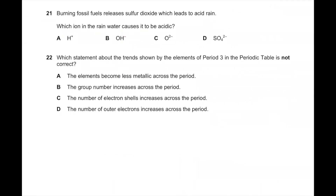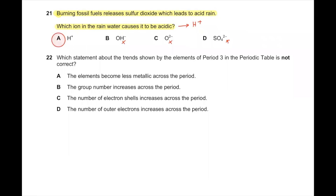Question number 21. Burning fossil fuels releases sulfur dioxide which leads to acid rain. Which ion in the rain water causes it to be acidic? Any solution becomes acidic due to the presence of H+ ion. So the options sulfate, oxide, and hydroxide are wrong. H+ ion will be the correct answer.